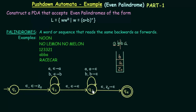In Q3, the next input is B. We check if B is on top of the stack — yes it is — so we pop it. The next input is A. We check if A is on top of the stack — yes it is — so we pop it as well. We don't push anything in either case.